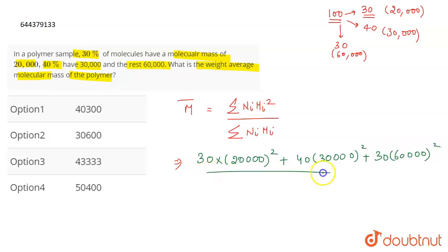Divided by the sum—simple sum without square—so we will have 30 into 20,000 plus 40 into 30,000 plus 30 into 60,000.